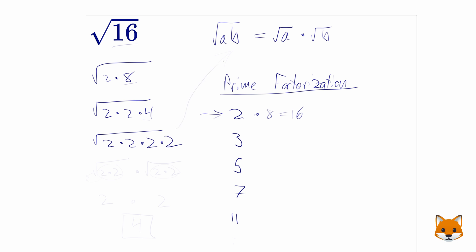Now, if you remember from the rule up here, this can be rewritten as the square root of 2 times 2 times the square root of 2 times 2. Now, this is what we've been looking for all along. That's these pairs.